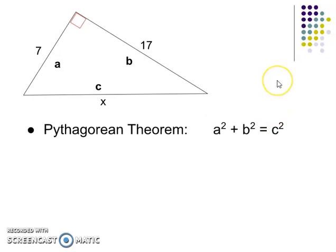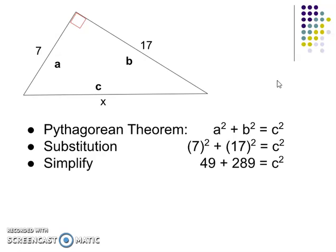And then I've got my Pythagorean Theorem. So from there, I'm going to substitute my values in, the 7 for the A and the 17 for the B. And I'll just use the C. I'll leave the C as the same. I could have changed it to an x.